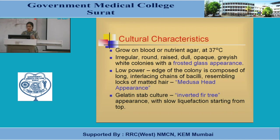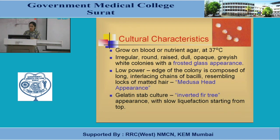Another cultural characteristic is growth in gelatin stab culture, which shows an inverted fir-tree appearance with slow liquefaction starting from the top. The colonies on nutrient agar show the frosted glass appearance with wavy projections — the inverted palm-tree-like structure seen in gelatin stab culture.